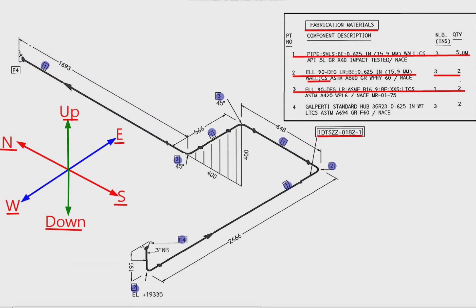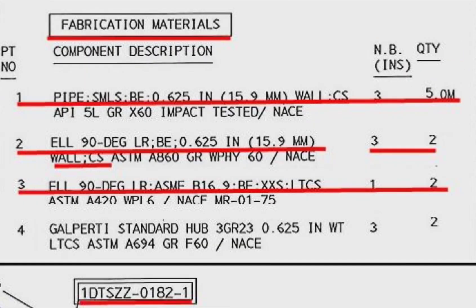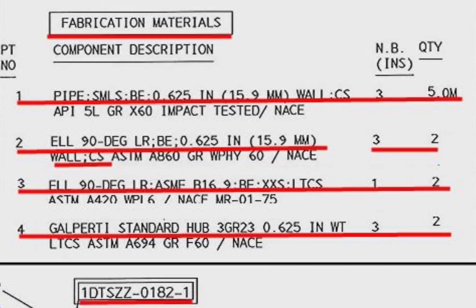Detail number 4 was used in two places also in the pipe drawing. The item number 4, Galperdi standard hub flange, 0.625 inch wall thickness, low temperature carbon steel material. The quantity is 2 pieces.